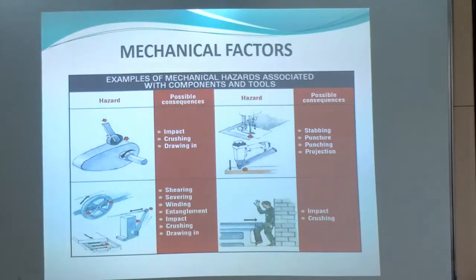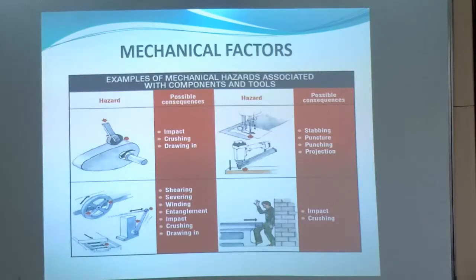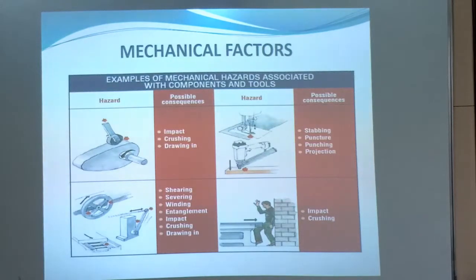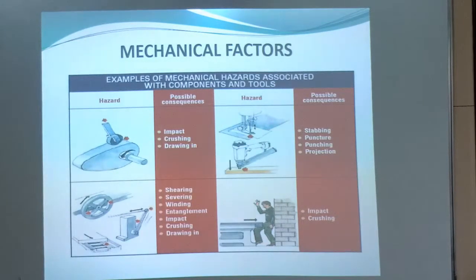Mechanical hazards involve moving, protruding, and sharp machinery parts, as well as injuries from slippery surfaces, falls, and poor housekeeping. These can cause impact injuries, crush injuries, sucking-in, shearing, severing, winding, entanglement, stabbing, puncture wounds, punching, and injuries from projections, falling objects, and crushing.